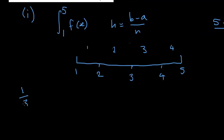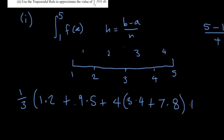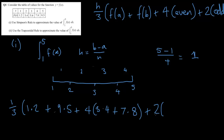Now we plug into the formula. So it's 1 over 3. F(A), which is the function of A evaluated at 1, giving 1.2. Plus F(B), which is the function of B evaluated at 5, giving 9.5. Plus 4 times the even numbers — 2 and 4 are the even x-values — so 4 times (3.4 plus 7.8). Plus 2 times the odd numbers — 3 is the odd x-value — so 2 times 5.6. We've used A, B, the even values 2 and 4, and the odd value 3.